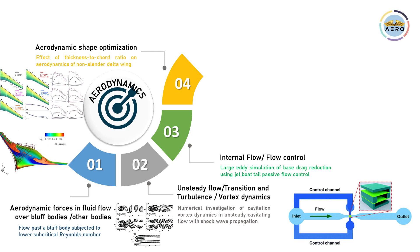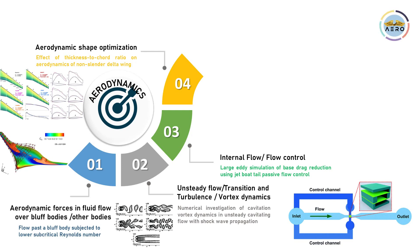Aerodynamic shape optimization is widely used in the aerospace field — for example, the effect of thickness-to-chord ratio on aerodynamics of a non-cylindrical delta wing. There are many research opportunities on various configurations of the delta wing.